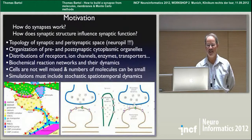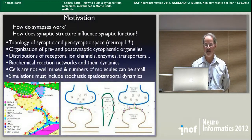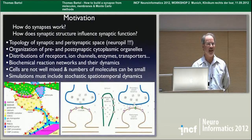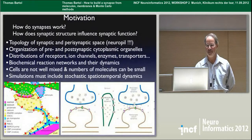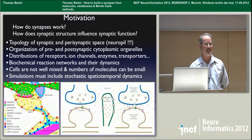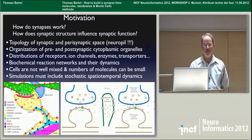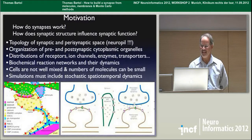In order to understand how synaptic structure and function are related, we need to know the topology of synaptic structure and the perisynaptic space around synapses, because they're not bottled-up little compartments. They're actually open through the extracellular space to the other neurons in the brain. That means we need to understand neuropil — and I put three exclamation points after neuropil. I'm sure a lot of you already have a fear of neuropil as I do.